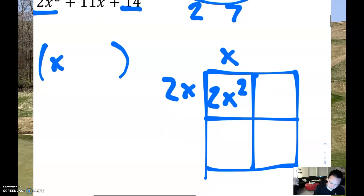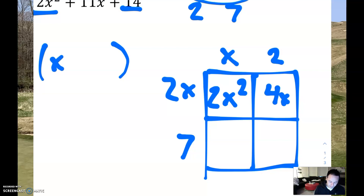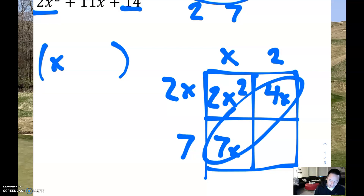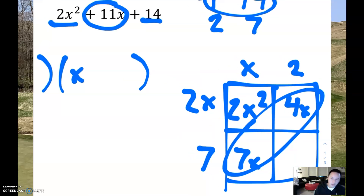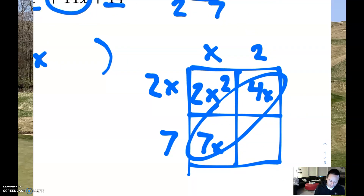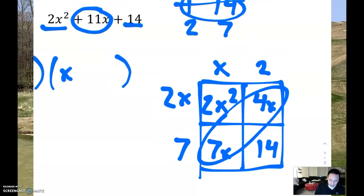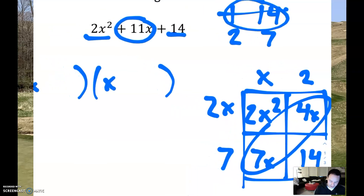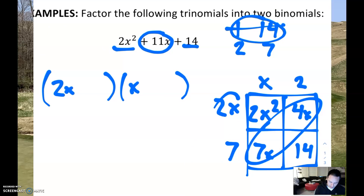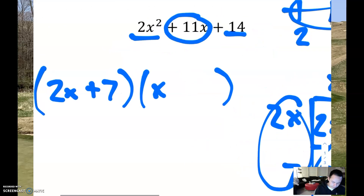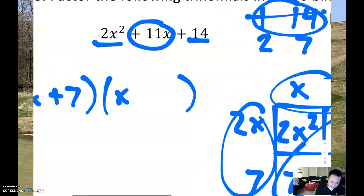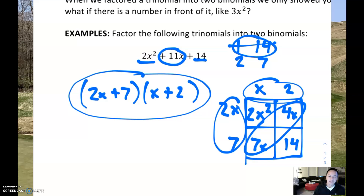Let's go ahead and try 2 and 7. I'm going to put a 2 here and a 7 here. Now 2x times 2 is 4x, and 7 times x gives you 7x. If you add these together, 7x plus 4x — what do you know, it creates that 11x! And you can check: 7 times 2 is 14. So this is the combination we're looking for because when you add those two middle terms together it creates an 11x. Our final binomial in this case is going to be 2x plus 7, and the other one is x plus 2. This is our final factored answer.